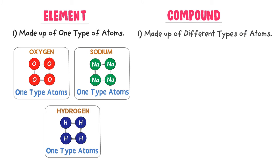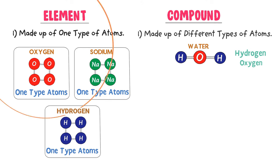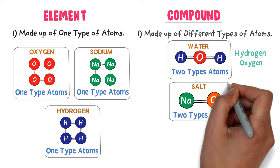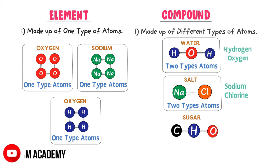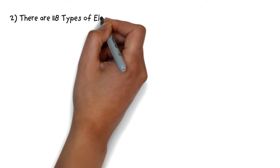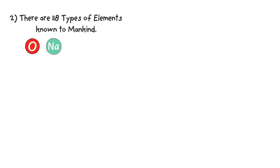Compounds are made up of different types of atoms. For example, consider water — water is made from hydrogen and oxygen, two different types of atoms, so it is a compound. Secondly, consider salt — it is made from two different types of atoms like sodium and chlorine, so it is a compound. Thirdly, consider sugar — it is made from three different types of atoms like carbon, hydrogen, and oxygen, so it is a compound.